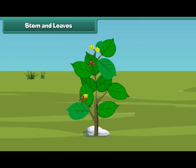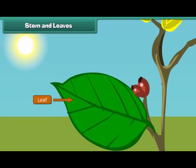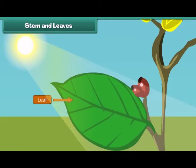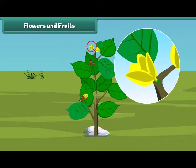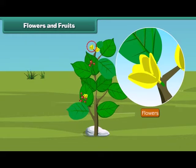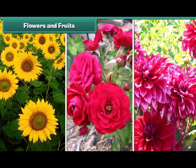Friends, do you know which part of the plant helps it prepare food? That's right — it is the leaves. Leaves are green in color and are born out of a stem. Now let us know about the most attractive and most beautiful part of the plant. Yes, that is the flower. Flowers are of different colors and types, like sunflower, rose, and dahlia, and so on.